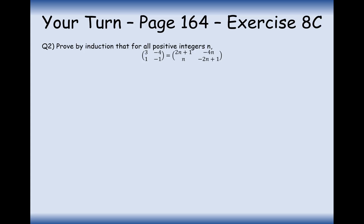Now it's your turn to have a go at this question. The matrix (3, −4; 1, −1) to the power of n can be simplified to a given form. There's obviously going to be a power of n on this matrix — it looks like that was missed out. Okay, your turn to have a go at this.